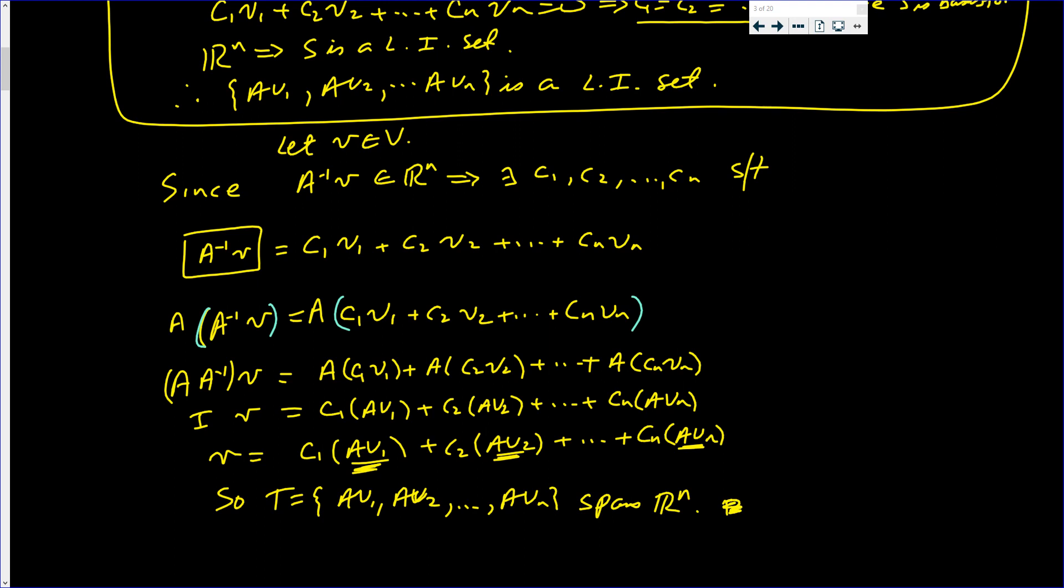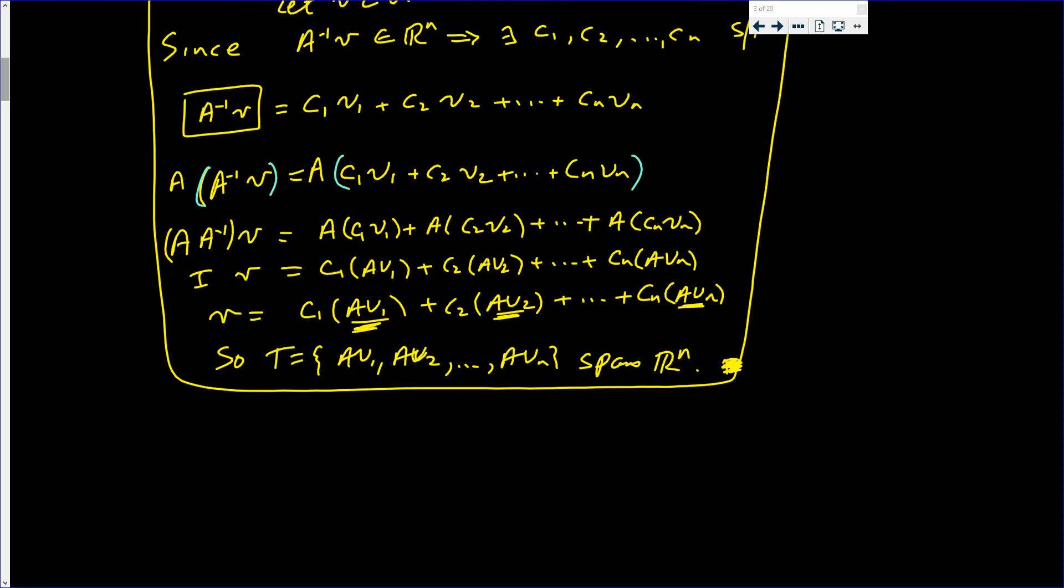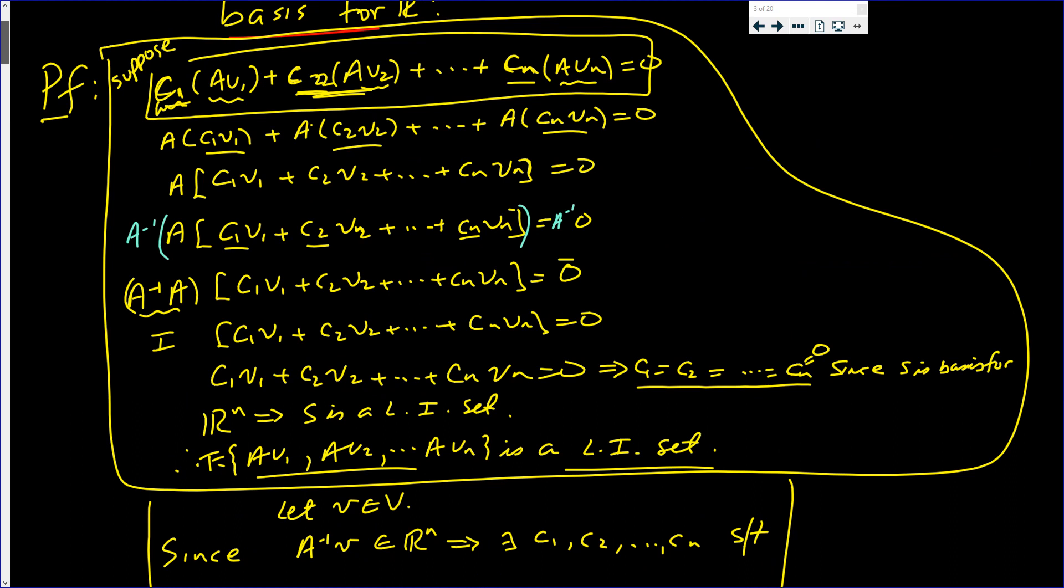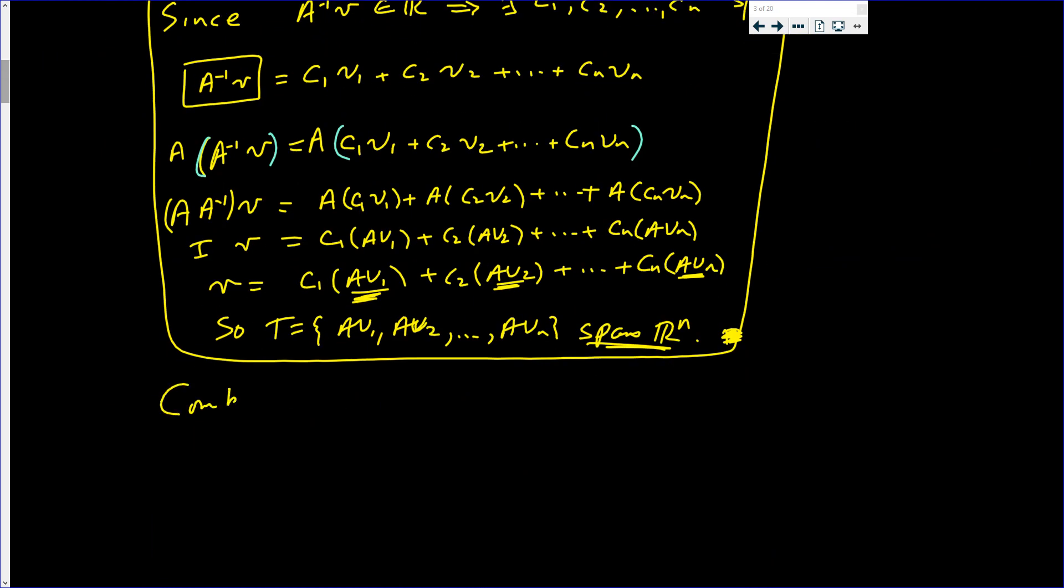And that completes the theorem. Let's write it up more neatly. I showed that T spans R^n, I showed that T is a linearly independent set. So, combining yields that T is a basis for R^n. Now, I can say I'm done.